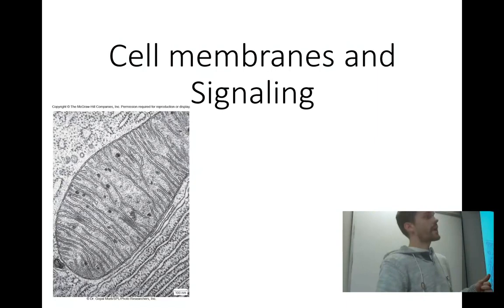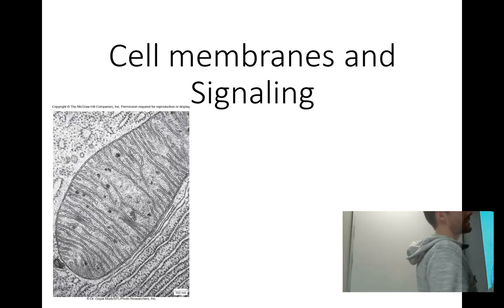The reason we have a whole chapter on the cell membrane is because it's very important to the function of the cell. There's lots of stuff going on inside and it needs to be regulated — you're going to make waste products and those have to get out, and you need energy and that has to get in somehow. So the cell membrane is very important for that.